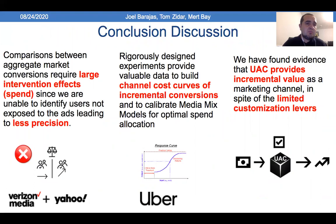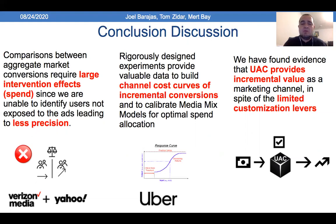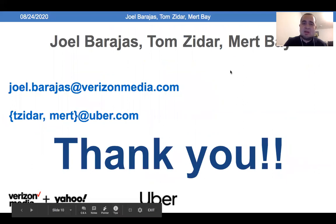The conclusions are that doing a user-level holdout is always better — there is no question about it. But when you don't have access to that, we are left with this time series aggregate approach. It is more challenging because we only observe spend inputs and conversion outputs, so we don't know who is really seeing ads. That translates into less precision and requires a larger spend to detect a bigger effect. These experiments inform cost curves and incremental conversions for financial planning. We provide initial evidence that UAC is incremental, with more studies needed to fully prove it.